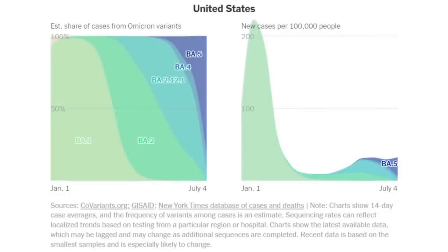In the United States, we're already seeing a sharp rise with BA.5. In terms of new cases per 100,000 people, we're not testing as much as before, but we know this is becoming a bigger issue because positivity rates are going up. There has been an overall decrease in non-BA.5 subvariants, but BA.5 is growing enough to keep the infection rate essentially constant. BA.5 is quickly replacing the other subvariants.